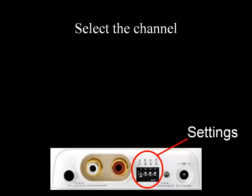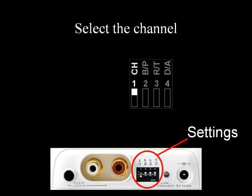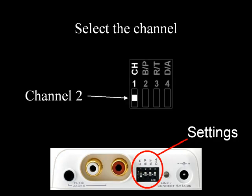There are four switches on the back of the pipeline which you need to configure. Switch 1 sets the pipeline channel. The pipeline can operate on one of three wireless channels. It does not matter which channel you choose, as long as all pipeline units in your broadcast network are on the same channel.